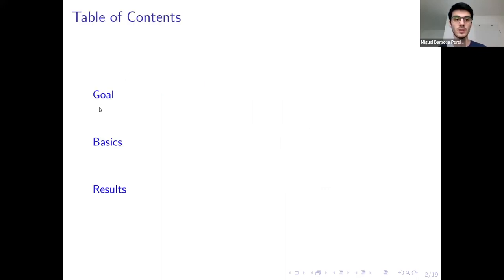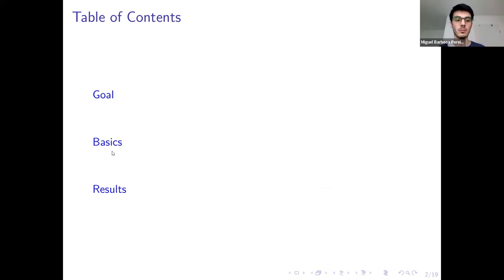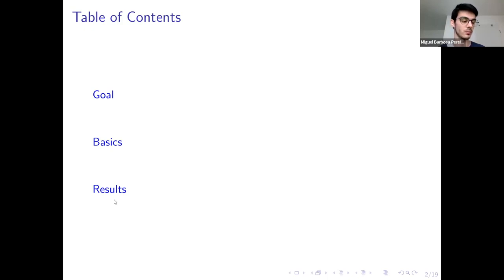First I'm going to state what my goal for this talk is — it's going to be to prove some conjecture, at least in some special cases. After that we're going to have a basic section where I'm going to state the necessary definitions to understand the conjecture and also to motivate it. Finally we're going to look at some results I was able to prove, and if time allows, also some proof sketches.